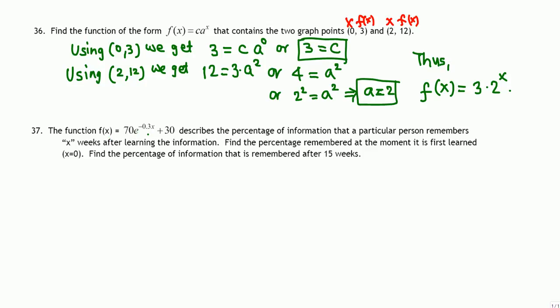Next problem: f(x) = 70·e^(−0.3x) + 30 is an exponential function describing the percentage of information a person remembers x weeks after learning it. Find the percentage remembered at the moment it is first learned, which means x equals 0.